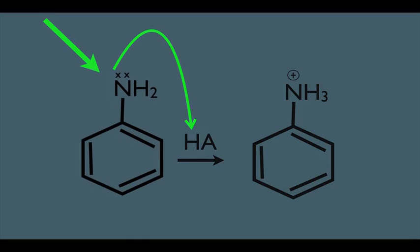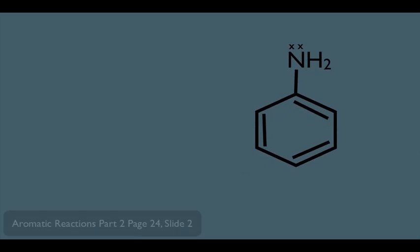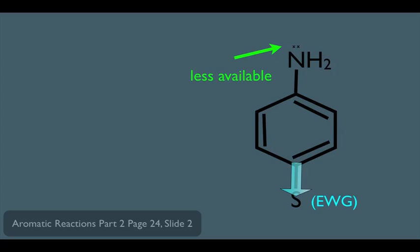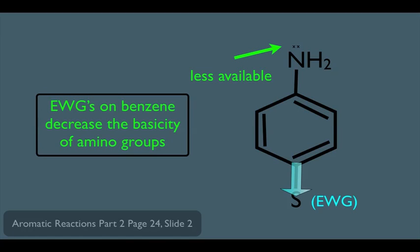Let's take our molecule and put a substituent on the benzene ring. If this substituent happens to be an electron withdrawing group, it would pull those lone pair electrons down towards the benzene ring and simply make them less available. Less available to be protonated means it makes the molecule overall less basic. So there is our key point: electron withdrawing groups on benzene decrease the basicity of amino groups on a benzene ring.